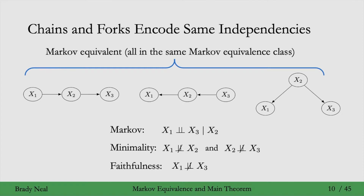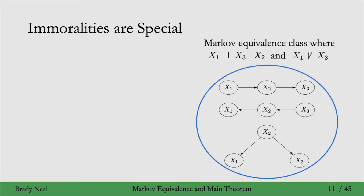Some other terminology we'll be using is that they're all in the same Markov equivalence class — a class of graphs that all imply the same conditional independencies. So that's chains and forks, but immoralities are a bit special, if you remember from back in week three. Here I've just copy and pasted the chains and forks Markov equivalence class, with a blue circle around it to indicate that this is a class, a set of graphs.